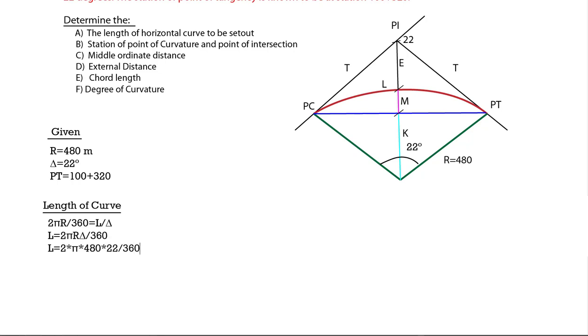The arc length formula is pi times R times delta divided by 180.